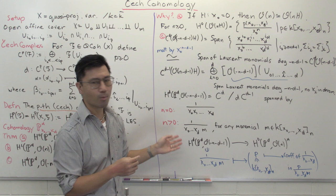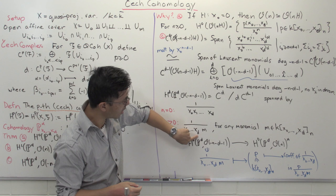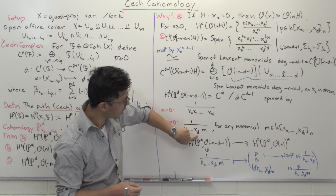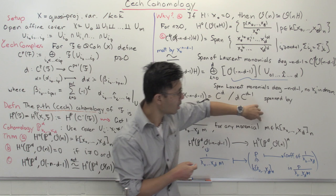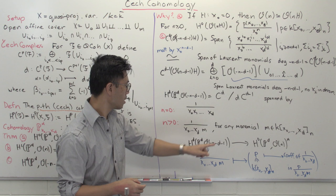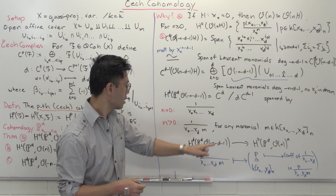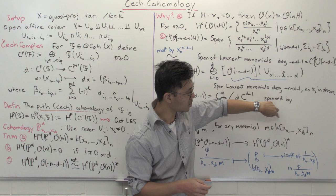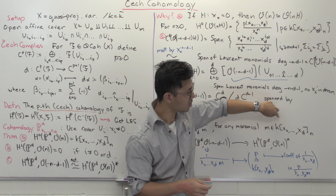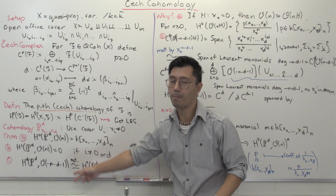For general n ≥ 0, you want Laurent monomials of degree -n-d-1. You need x₀·…·xd in the denominator (degree -d-1), and to achieve degree -n-d-1 you multiply by 1/m where m is a monomial of degree n in the polynomial ring. These elements are linearly independent, and their count equals exactly the dimension of H⁰(O(n)), confirming the duality Hᵈ(O(-n-d-1)) ≅ H⁰(O(n))∨.